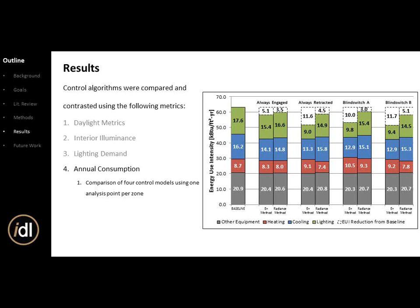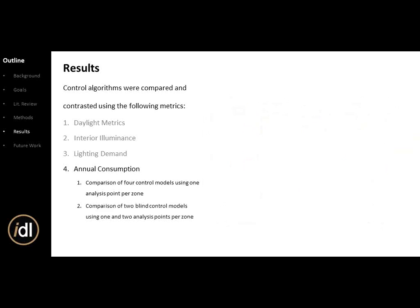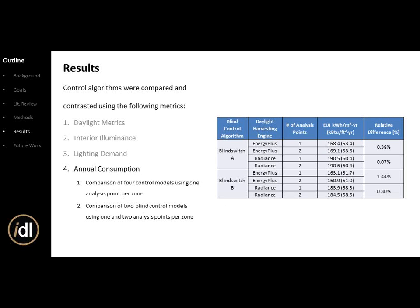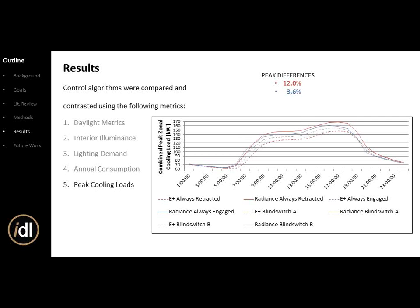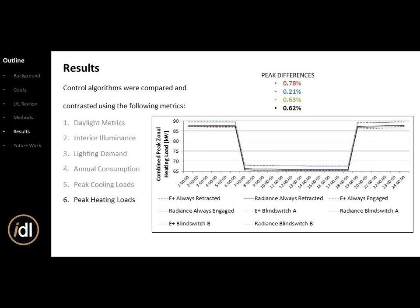Annual consumption comparison shows EnergyPlus on the left and Radiance on the right for each run. Overall, EnergyPlus over-predicts energy savings due to conservation measures, so it's important to note it's not perfect. We also compared one versus two sensors per zone — there's at most a 1.44% annual energy consumption difference, so you really don't need multiple sensors. Cooling loads are somewhat affected, and heating for always retracted versus the baseline is about 0.7%, so not a major factor.